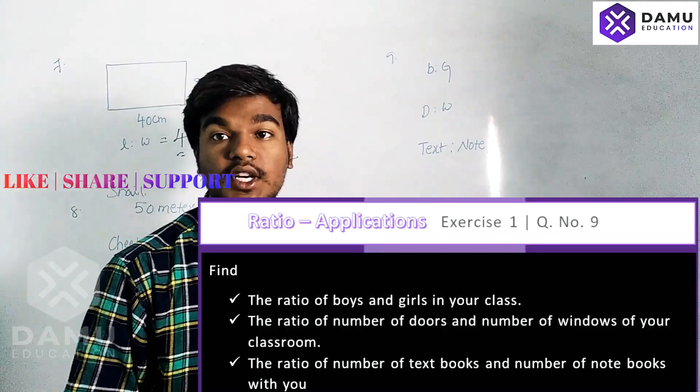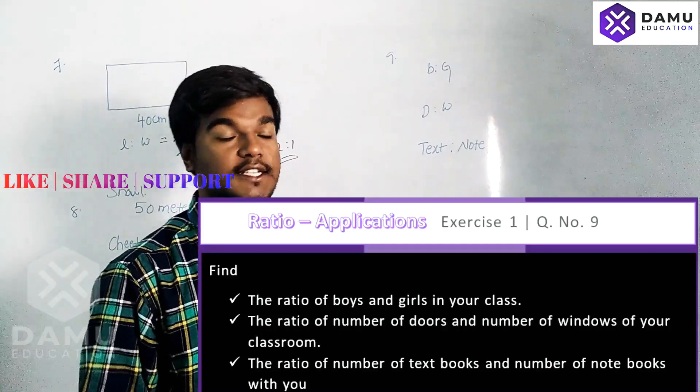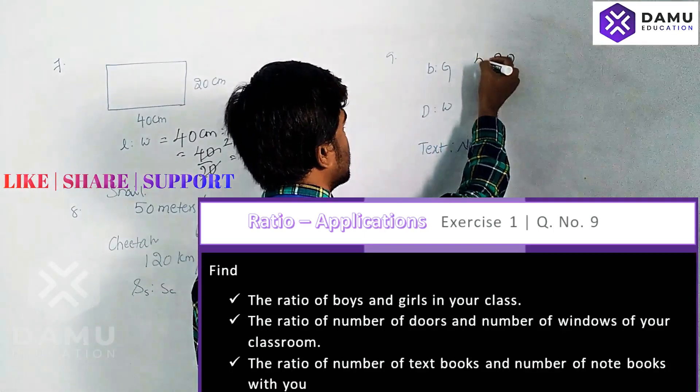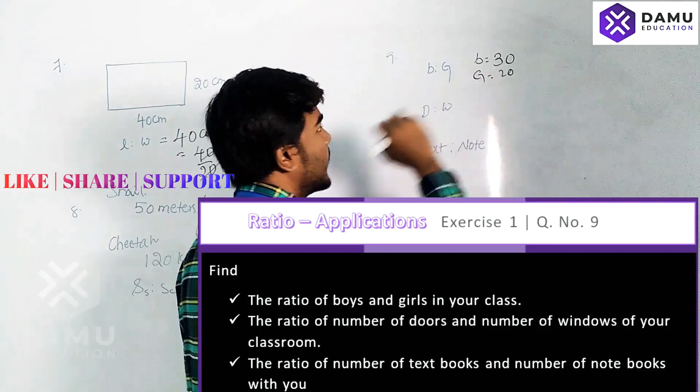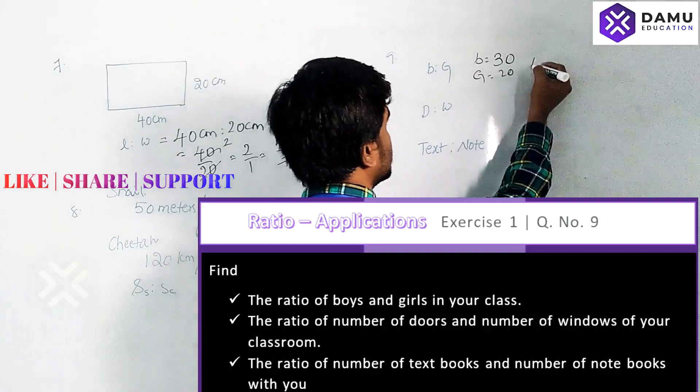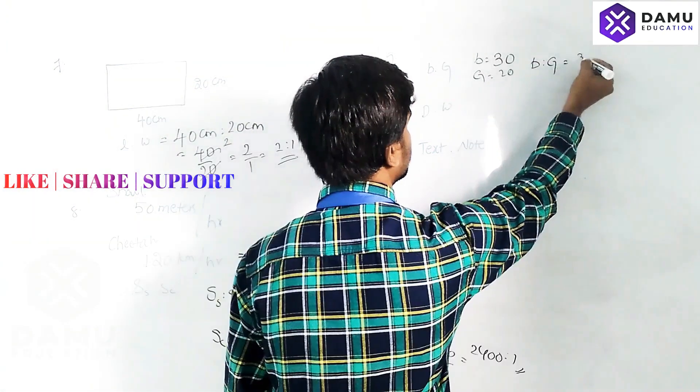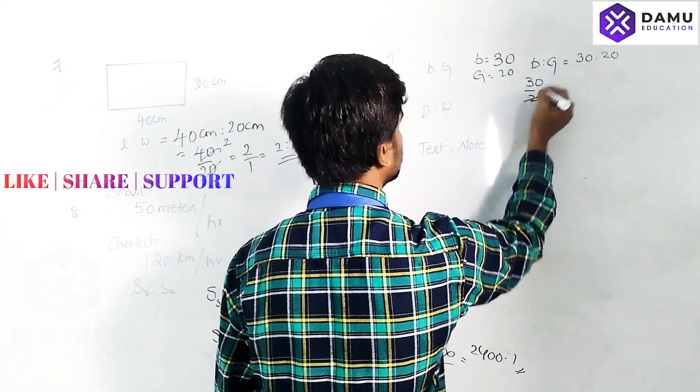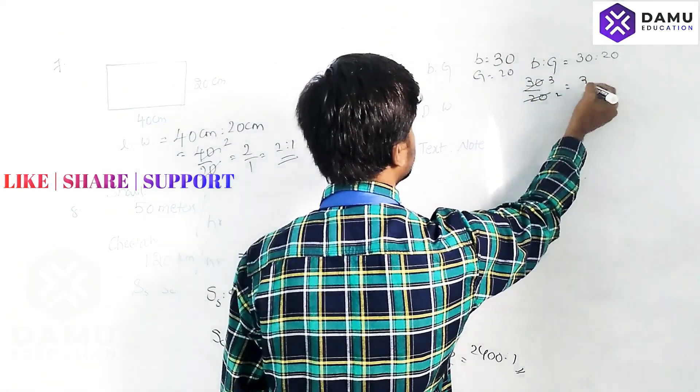Let the number of boys be 30 and the number of girls be 20. The ratio B is to G will be 30 is to 20. 30 by 20 is 3 by 2. That is 3 is to 2.